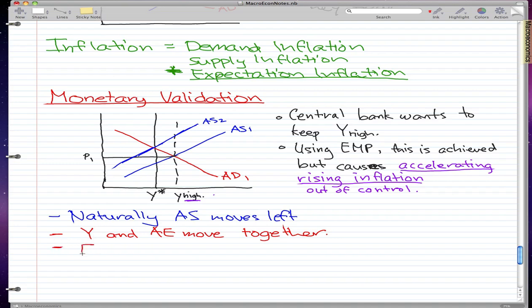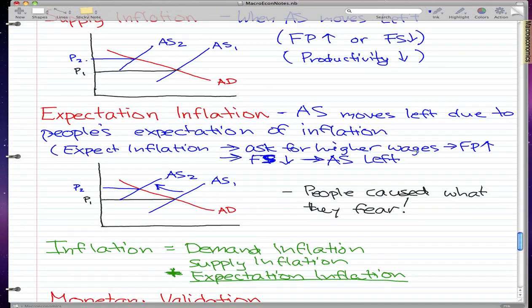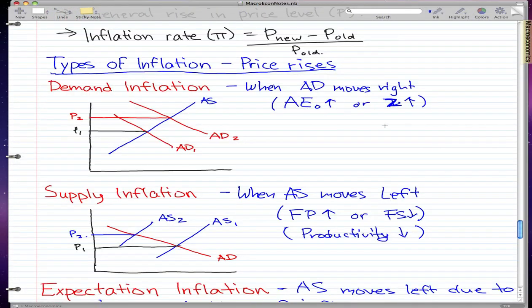Well, they'll use EMP. They'll use expansionary monetary policy. Remember that this causes I to fall, MS to rise, and causes Y and Z to increase. Y and Z both increase, and this occurs when we have demand inflation.